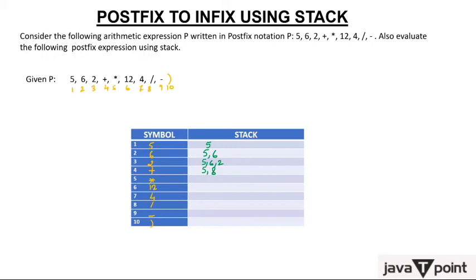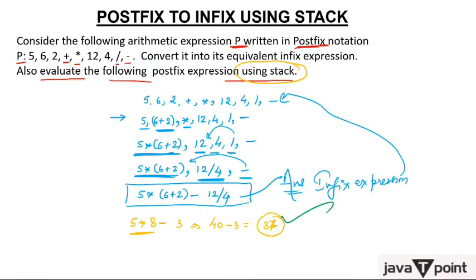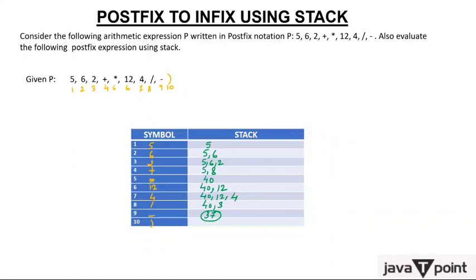Then multiply: take out 5 and 8, put multiply between them — 5 × 8 = 40. Stack has 40. Then 12 is pushed, then 4 — stack: 40, 12, 4. Then divide: take out 12 and 4, 12 / 4 = 3. Stack: 40, 3. Then minus: take out 40 and 3, 40 − 3 = 37. Finally 37 remains, which matches our direct calculation. This confirms the correct answer using stack evaluation.